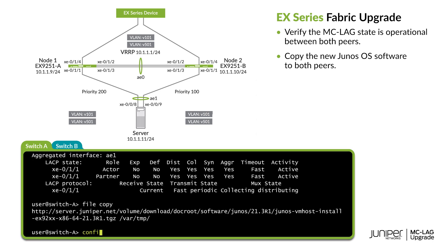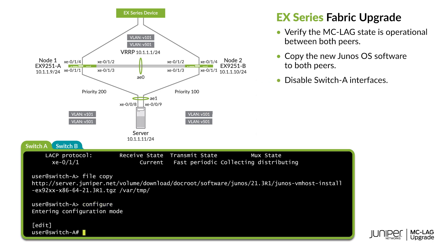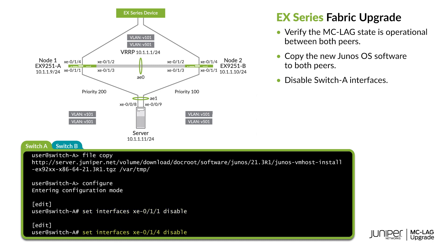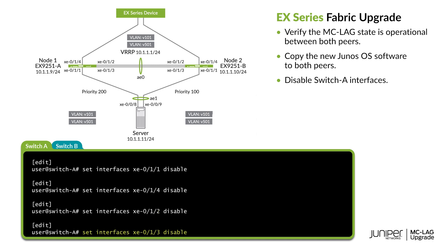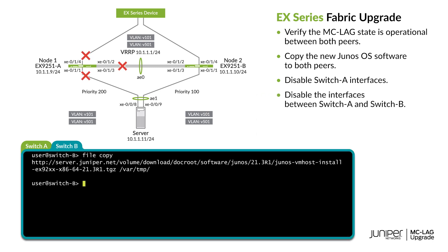Enter into configuration mode and issue the command to disable the server-facing and uplink interfaces on EX9251A. Disabling these interfaces minimizes disruption while EX9251A switches over to EX9251B. Once the configuration is committed, the server-facing and uplink interfaces are disabled.